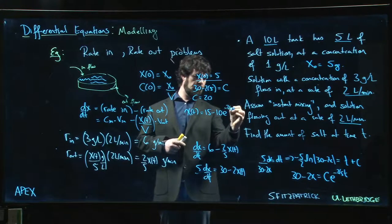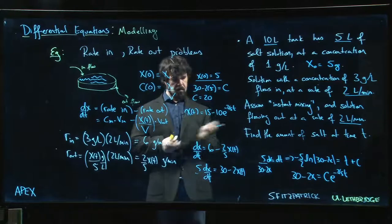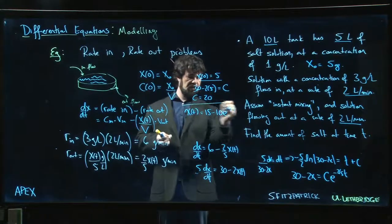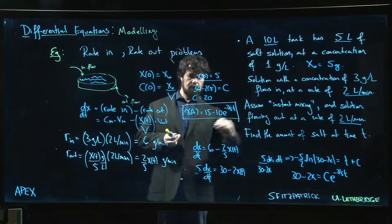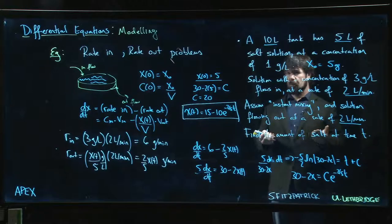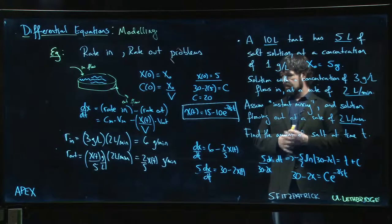So we get this: we get x(t) is going to be 15 minus 10 e to the minus 2 over 5 t. And this is exactly what we're looking for - this right here gives me the amount of salt in the tank as a function of time.